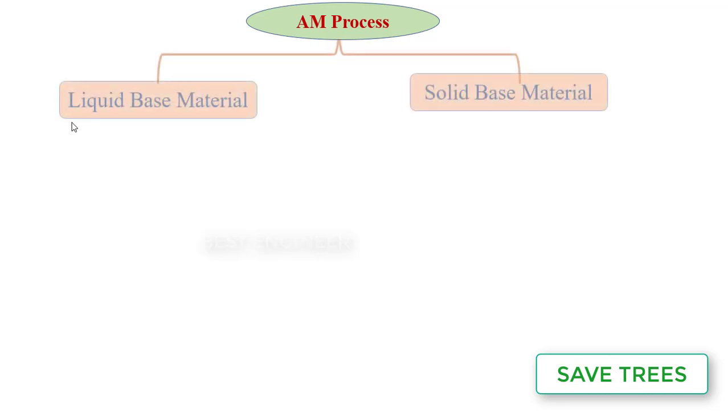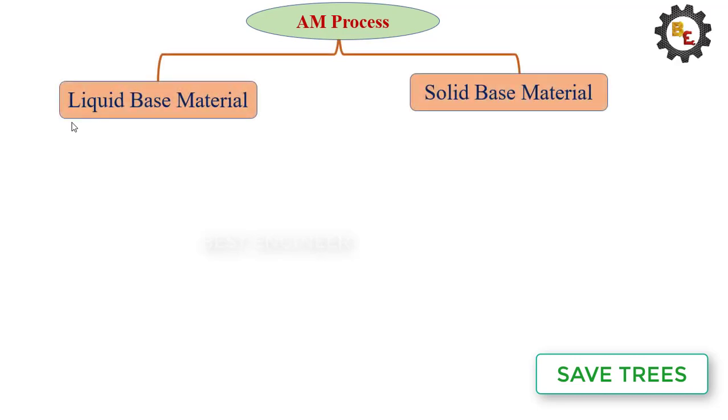Additive manufacturing processes are generally classified into two categories based on the type of material form: liquid-based material and solid-based material.